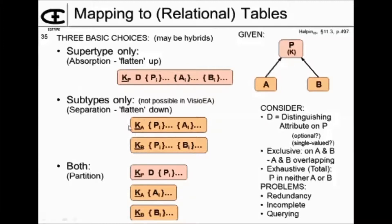So here I've got the population of A's. I've got the key of the supertype and then I've got the supertype and the A subtype attributes. And I'll have another table for the B's.